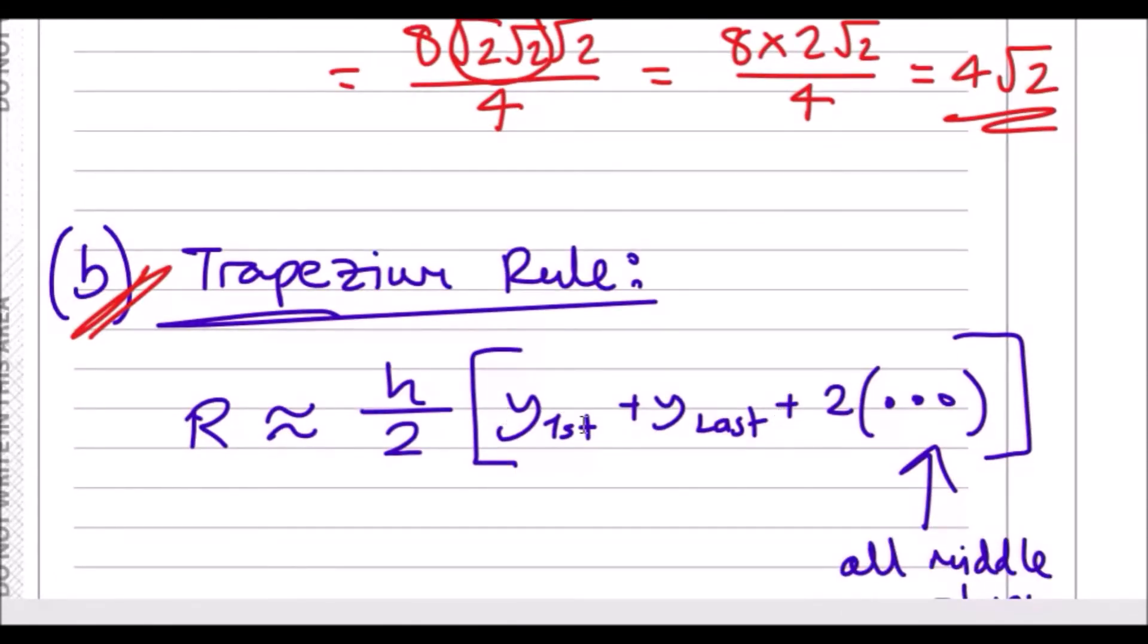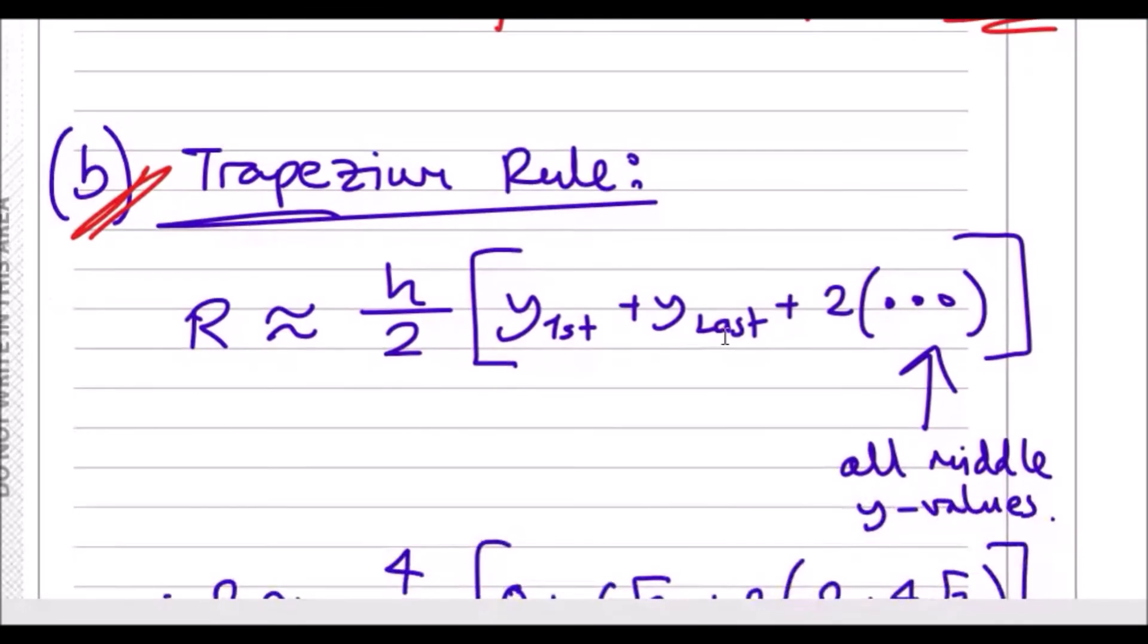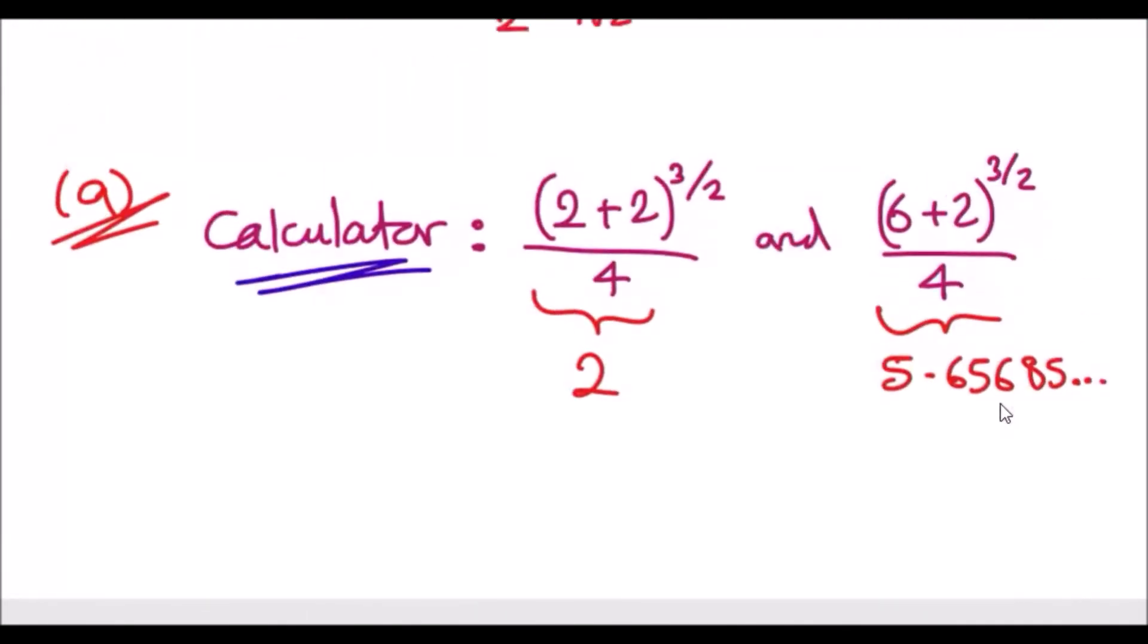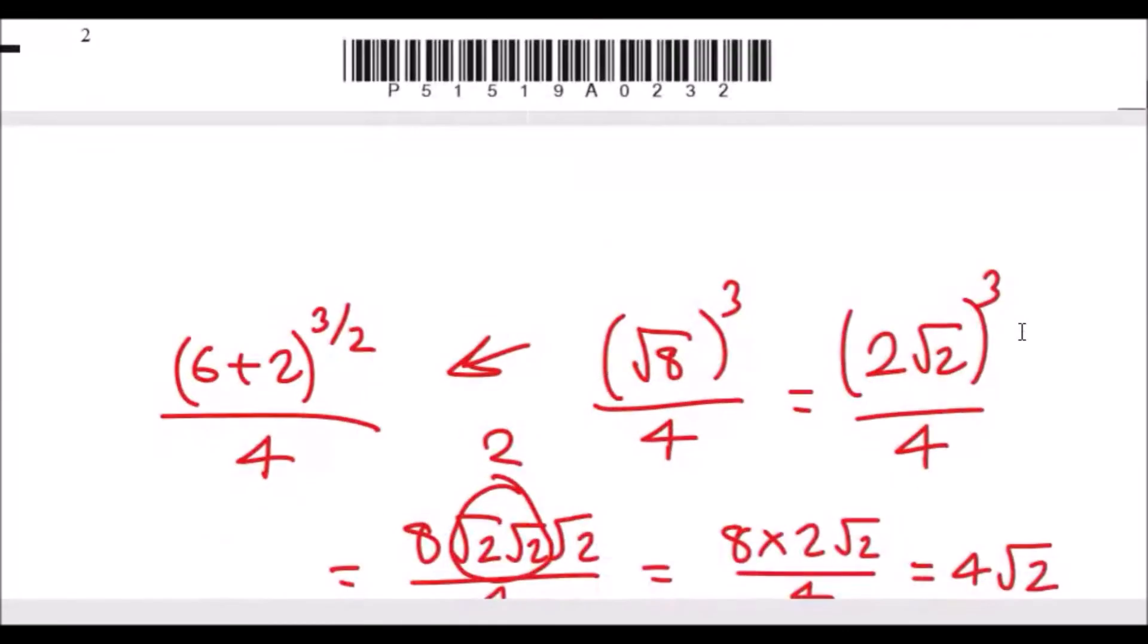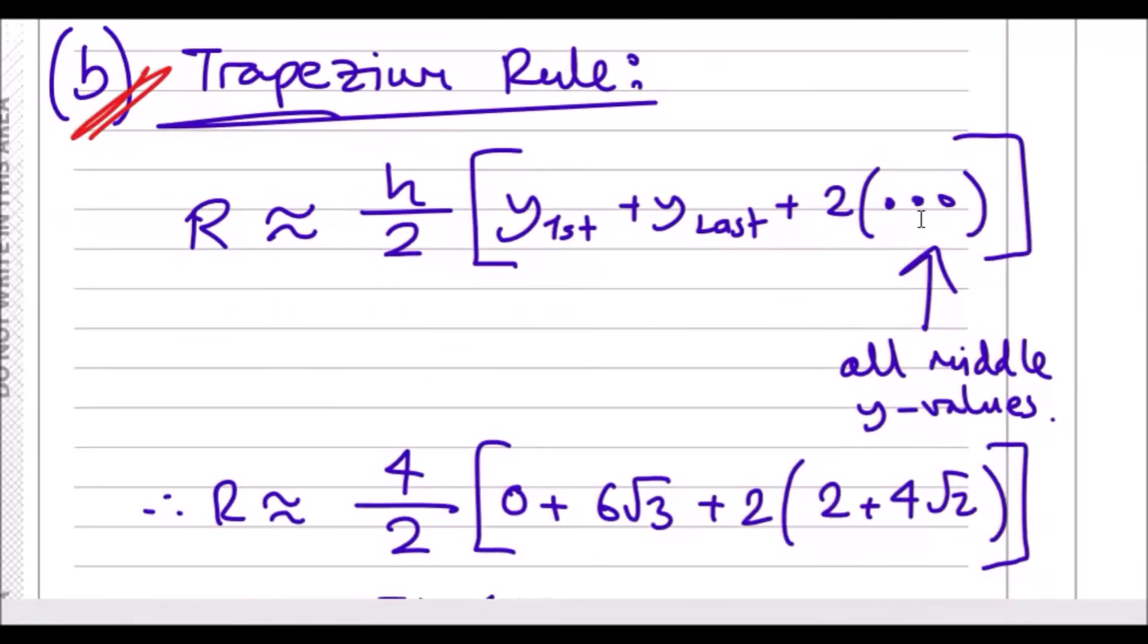The formula is always the first y value plus the last y value, plus two times everything in between. So the first and last y values according to the table would be 0 and 6√3, and then these two values in the middle are inside the middle parts, so this would be two times the middle values.